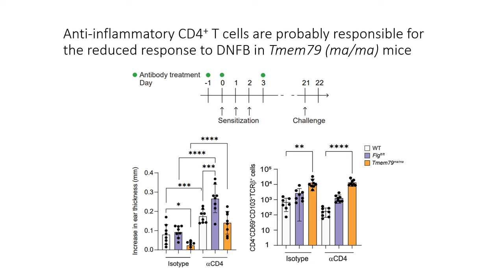In all three mouse strains, we found an increased challenge response measured as change in ear thickness in mice depleted for CD4 cells compared to mice treated with the isotype control. But the response was still reduced in matrin-deficient mice, likely due to the highly increased number of CD4 tissue-resident memory cells that are not removed by the depleting antibody and may play an anti-inflammatory role.